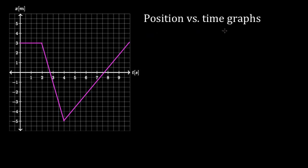Let's talk about position versus time graphs. These are tricky — if you've never seen these, they can be really tricky. But physicists love these, teachers love these, they're on lots of tests. Why do so many people love these? Because you can compact a ton of information about the motion of an object into this small space. You basically specify the entire motion of the object without writing an equation or saying a bunch of words. So these are actually really handy — you should know how to deal with them.